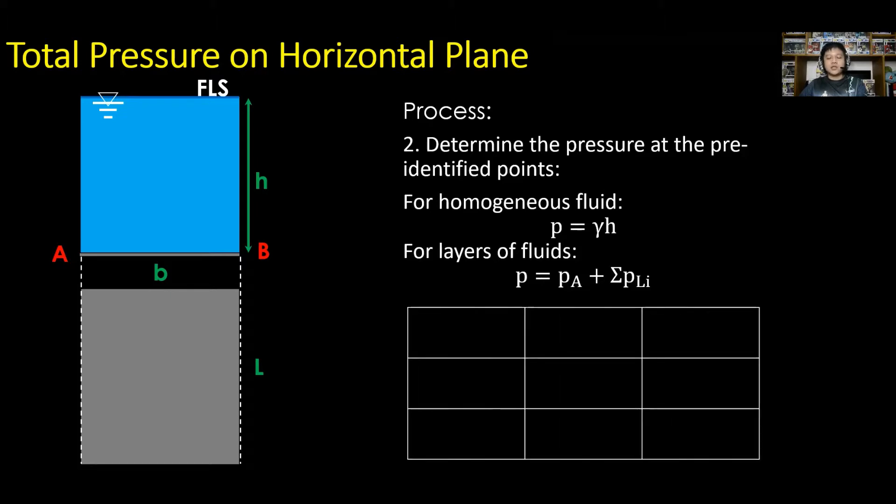Better to present solution in table form. Identify points, depth H, and finally pressure P for our table solution. For points we have A and B. For H, it is the depth measured from free liquid surface. For layers of fluids, the column for H is not needed.